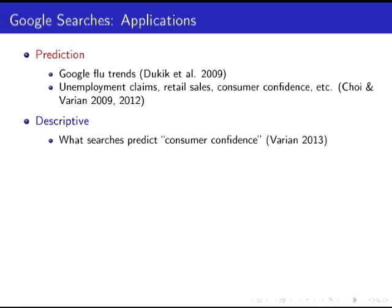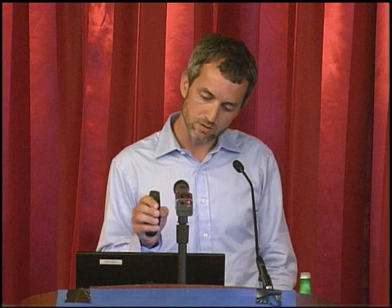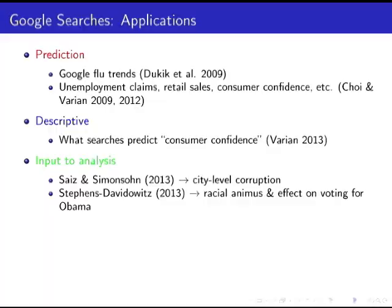Related to that, another thing in that literature people have tried to forecast are consumer confidence numbers. One of the interesting aspects of those papers is the descriptive question: what is consumer confidence actually? People are asked 'how confident are you about the economy?' — what is that really picking up? Looking descriptively at the search terms that predict it, you see it tends to load on things about people's investments and financial behavior, giving some insight into what that consumer confidence number might mean.